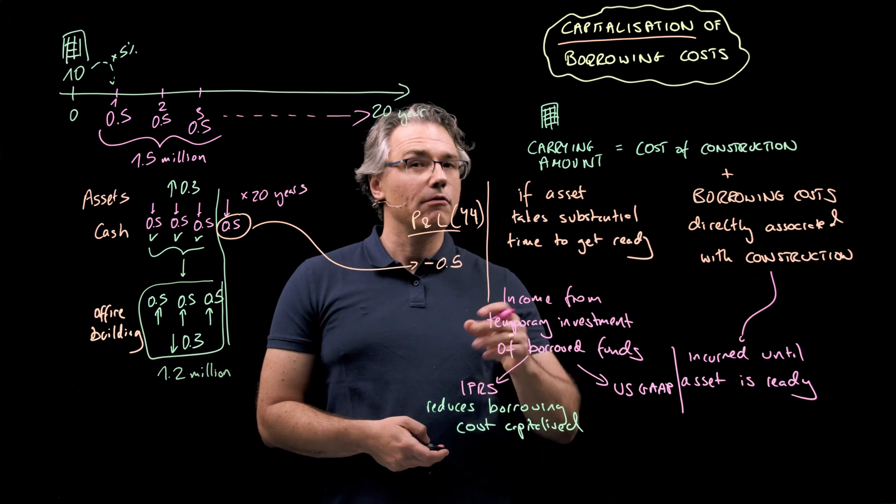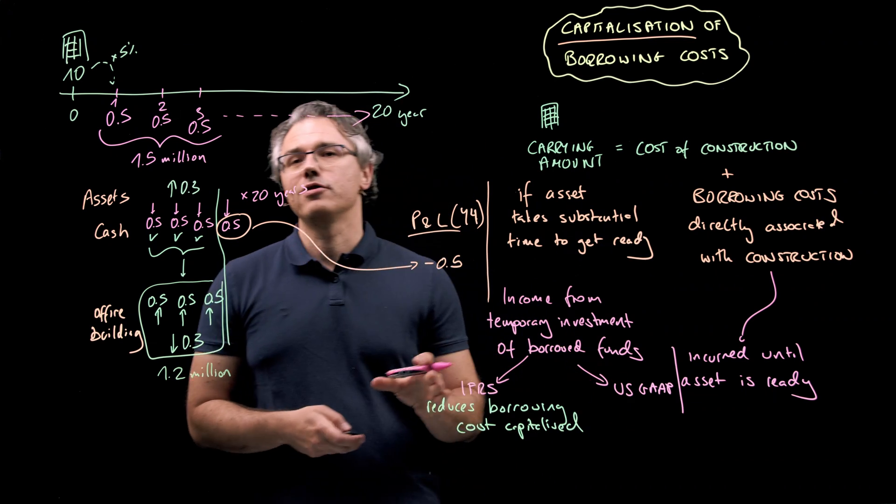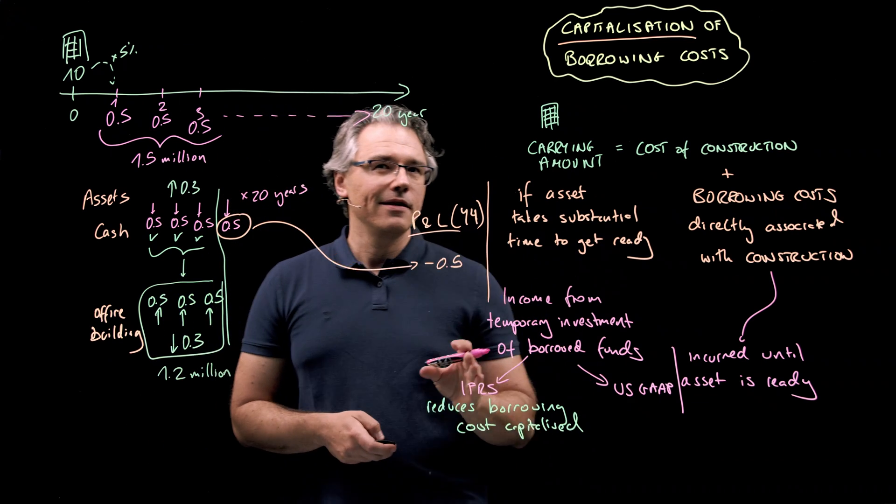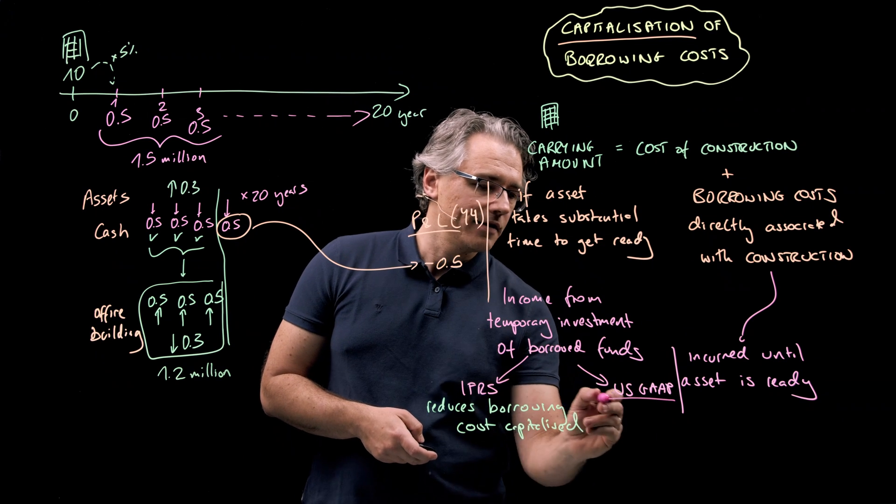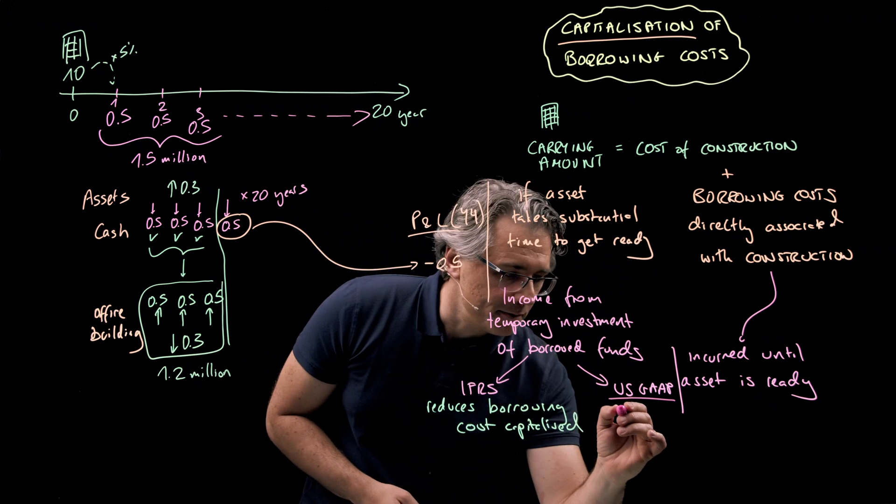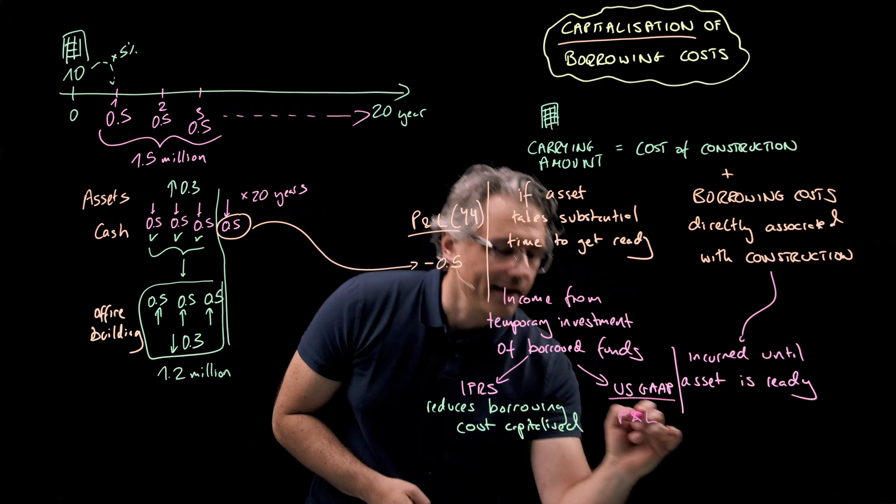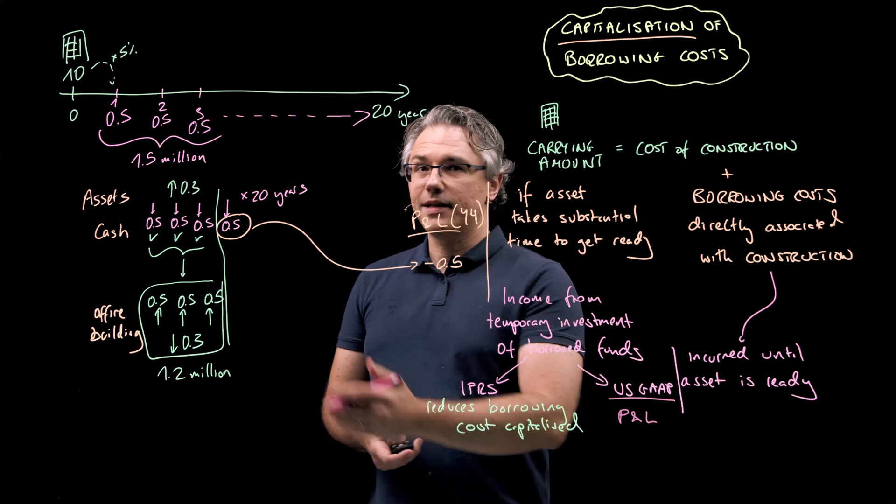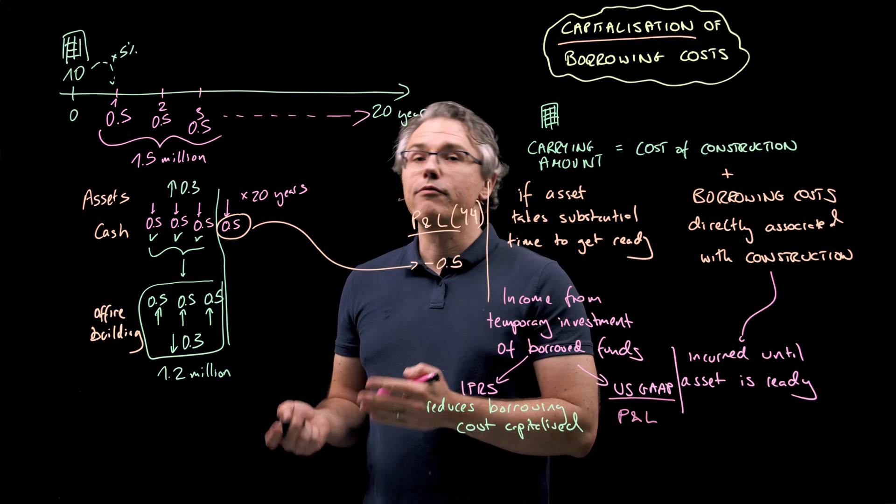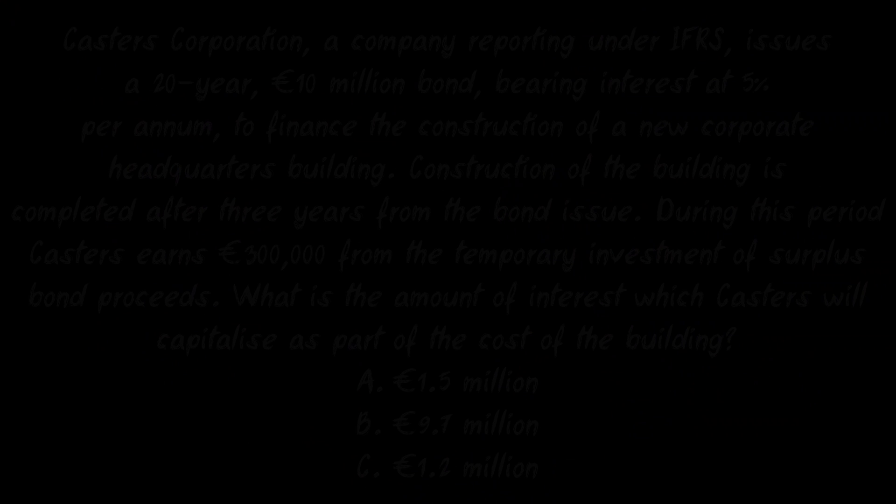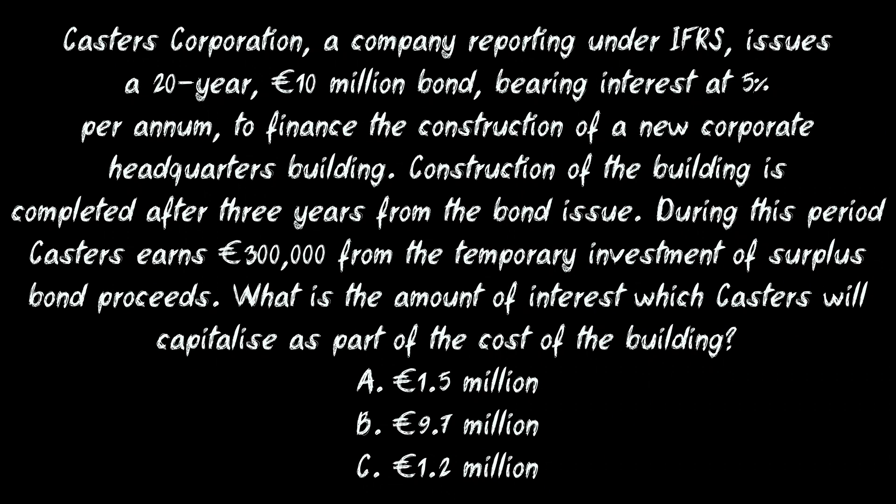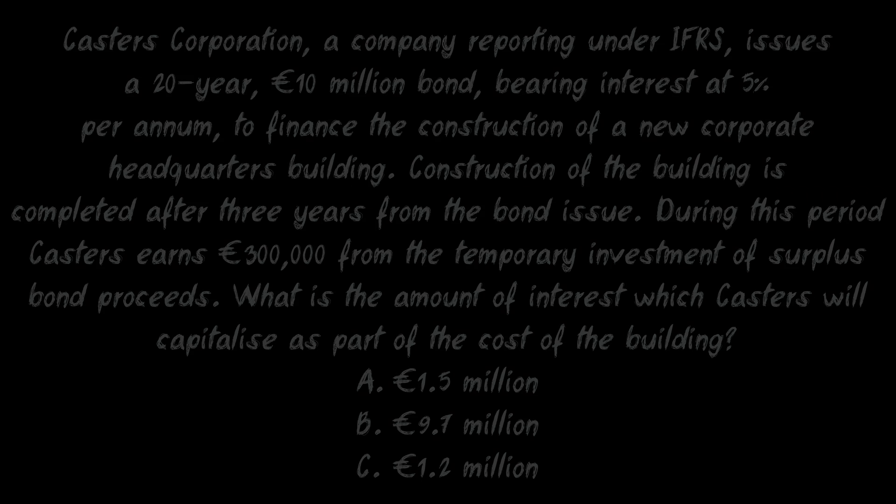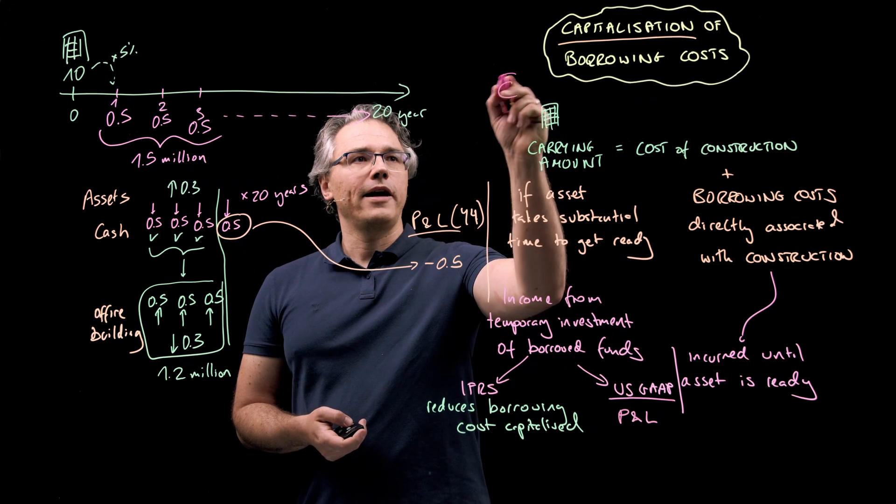On the other hand, if we were following US GAAP, which we're not in this question, but if we were, this income would be taken directly to P&L. And we would leave the amount capitalized as it was, the original 1.5 million. However, seeing as this was an IFRS-based question, we can identify the correct answer as C, 1.2 million. And let me just write that answer down.